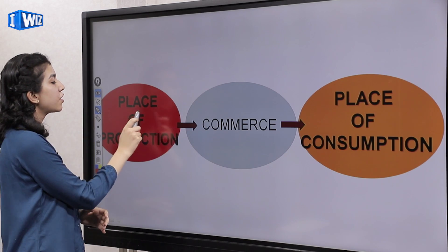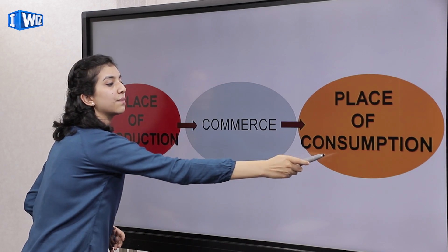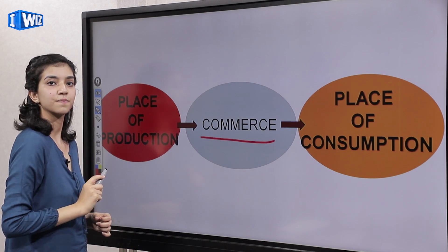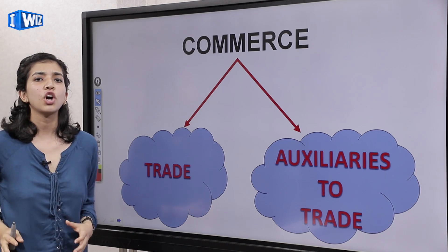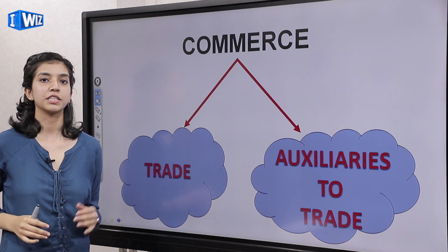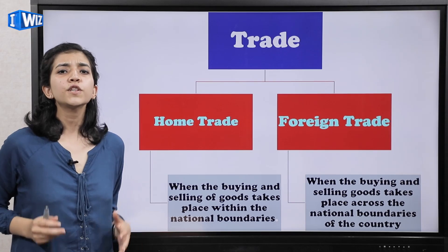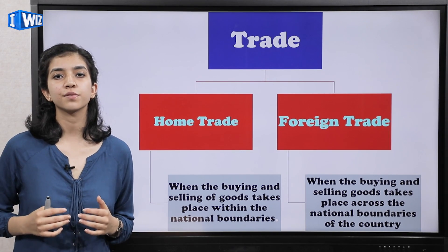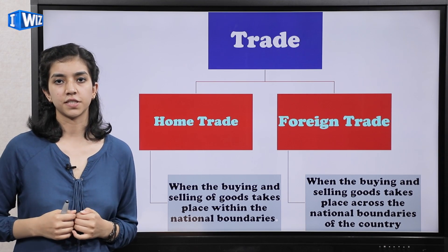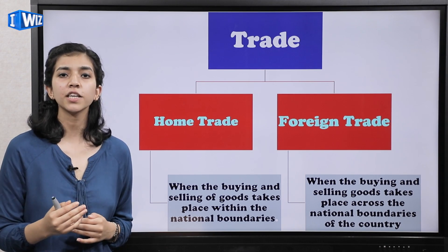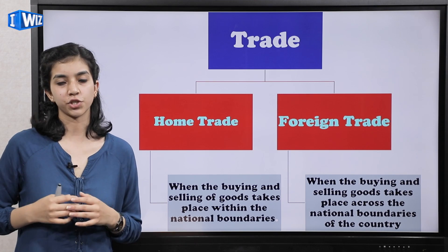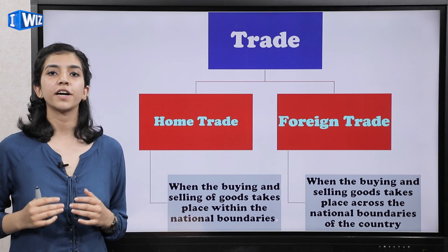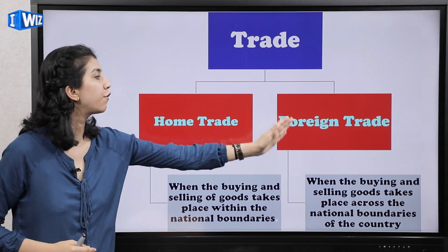The question is: place of production se place of consumption tak ek good pohunchega kaise? Wo pohunchta hai commerce ke through. Commerce has two types: trade and auxiliaries of trade. What is trade? Trade in simple terms means buying and selling of goods and services — aap paise dete hain aur aapko uske badle ek good mil jata hai. Like, you pay for a cloth, you get a cloth. Now trade is further divided into home trade and foreign trade.